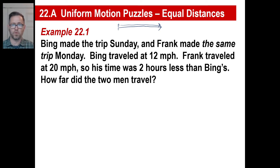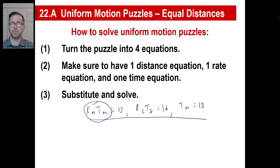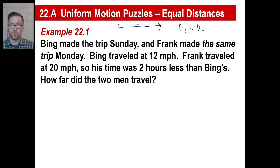Well, if their distances are equal, we can write an equation, right? We're going to say the distance of Bing is the same thing as the distance of Frank. There's only one thing to remember: we don't use Ds in these equations. The distance equals rate times time. Think about it — if you went 50 miles an hour for 10 hours, you went 500 miles. So we don't write Ds at all. We write Rs and Ts. Change D sub B into R sub B times T sub B, and that equals R sub F times T sub F. There's one equation.